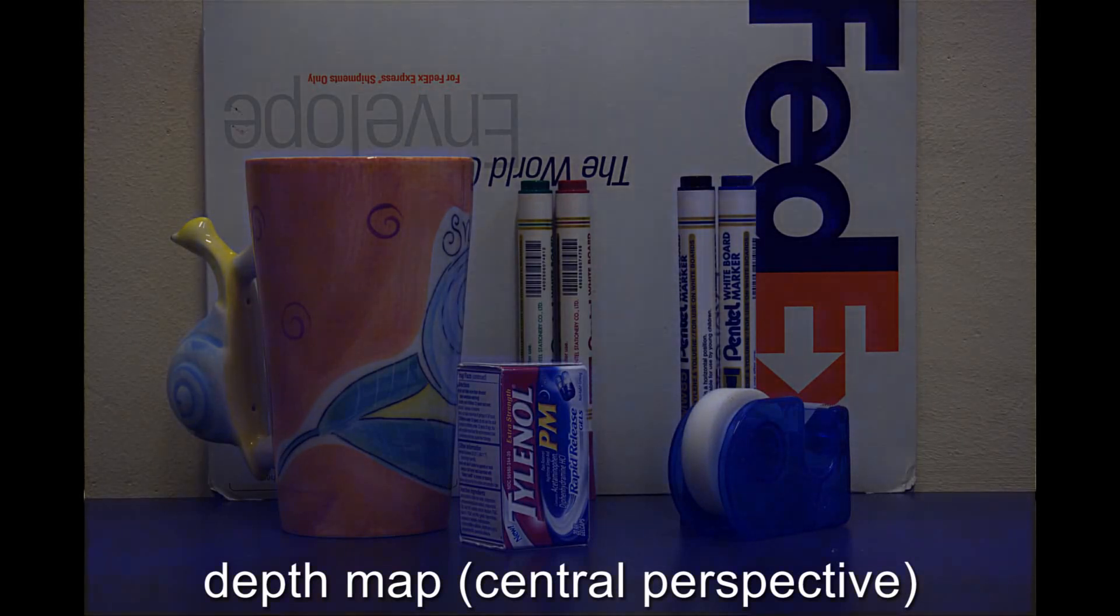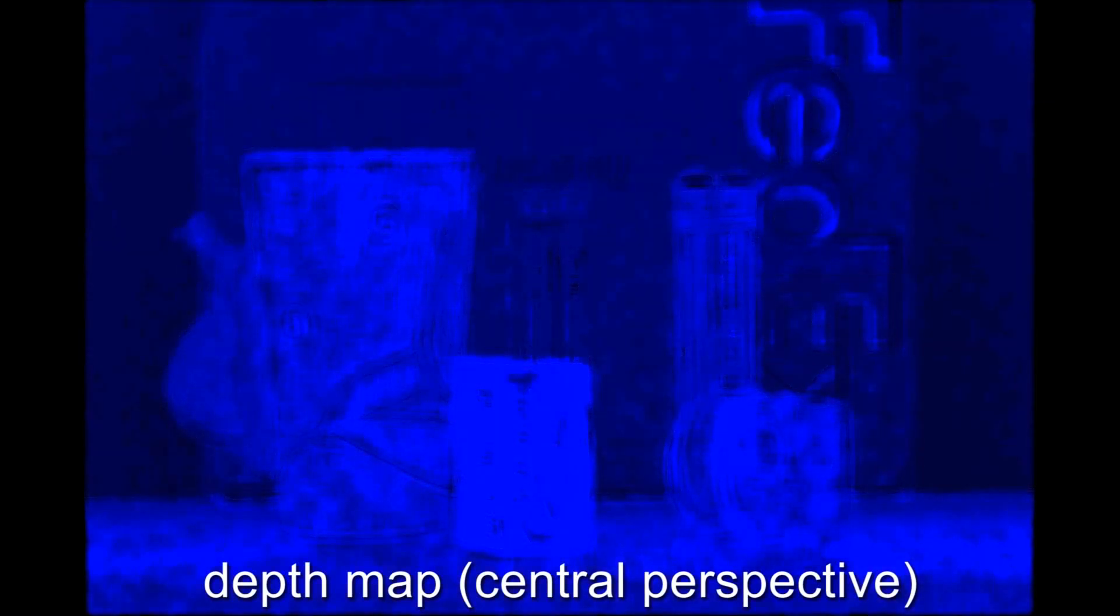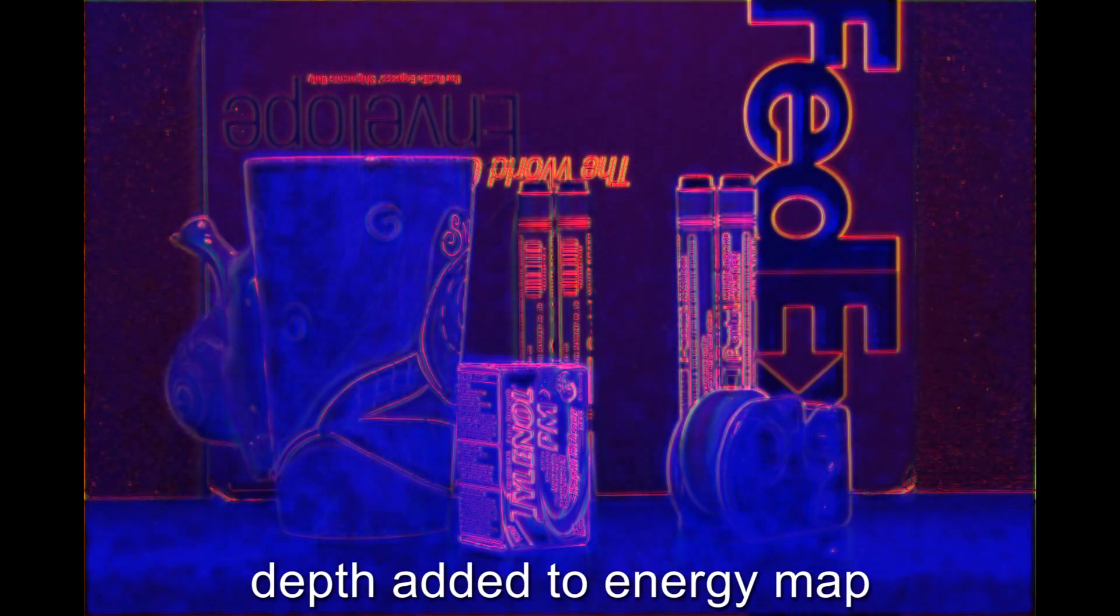We assume that background objects are visually less salient. Therefore, we penalize seams through foreground objects to better preserve them. This is achieved by reconstructing a coarse depth map from the focal stack, which is used as a third energy term for seam carving.